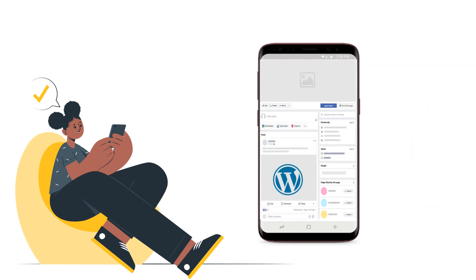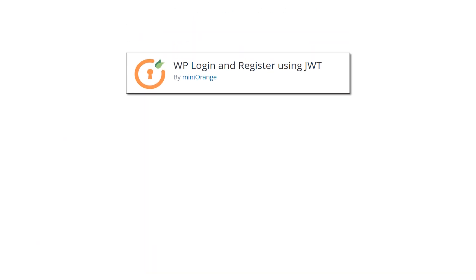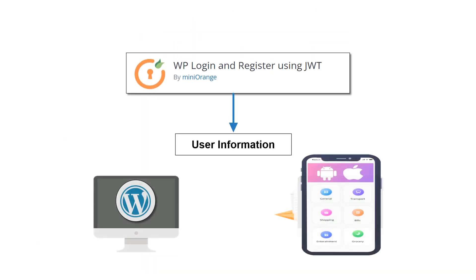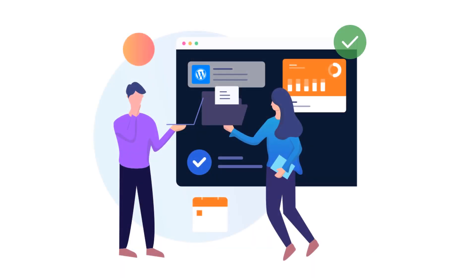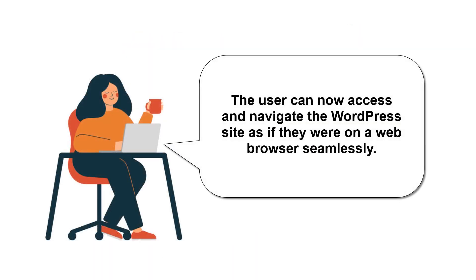Once logged in, if the user clicks on a WordPress website link within the mobile application, then they will be automatically logged into that WordPress site, which will open within the mobile application. With our WP Login and Register plugin, user information is shared securely between the mobile application and the WordPress site automatically. The user is logged into the website and does not have to re-enter their credentials. The user can now access and navigate the WordPress site as if they were on a web browser, seamlessly.